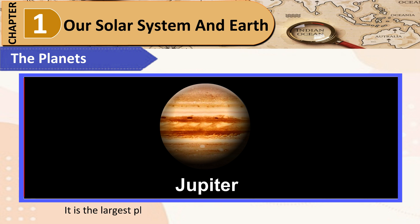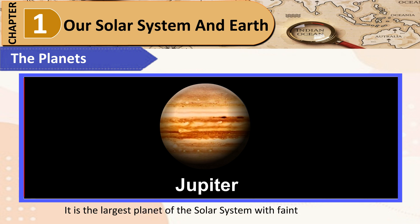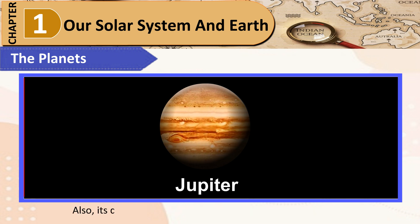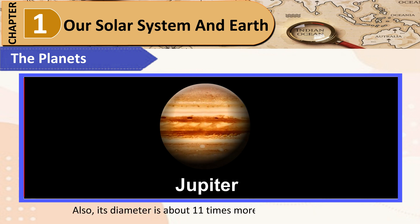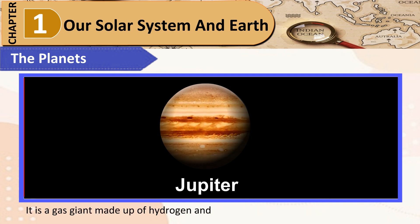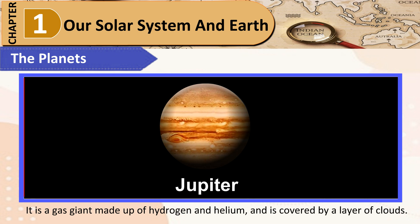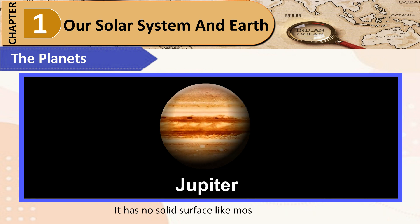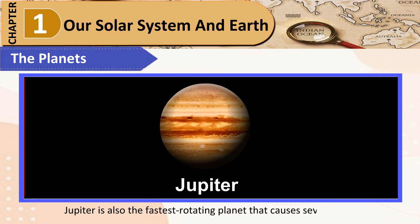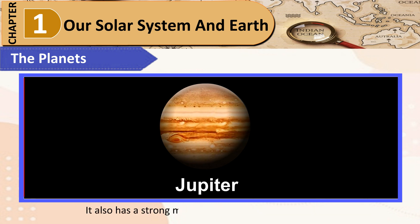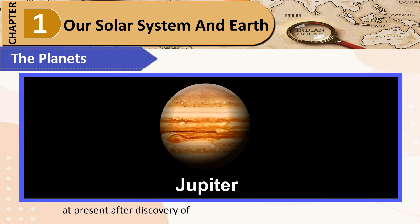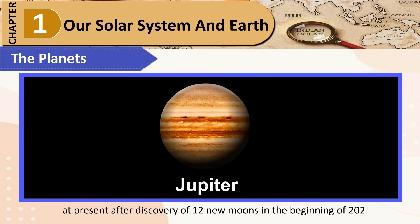Jupiter: It is the largest planet of the solar system, with faint rings around it. It is about 318 times heavier than the Earth, and its diameter is about 11 times more than that of the Earth. It is a gas giant made up of hydrogen and helium and is covered by a layer of clouds. It has no solid surface. Jupiter is also the fastest-rotating planet, which causes severe storms. It has a strong magnetic field and 92 natural satellites, following the discovery of 12 new moons at the beginning of 2023.